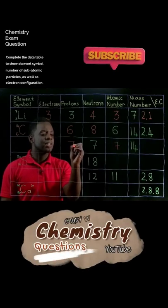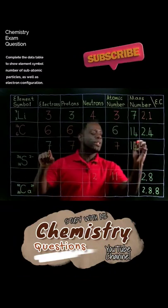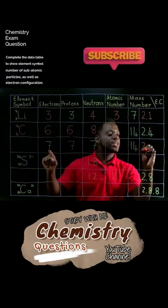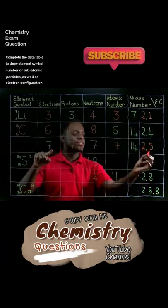The atomic number is the number of protons in the nucleus, and the electron configuration will be two on the first shell and five on the second shell to give us seven electrons in total.